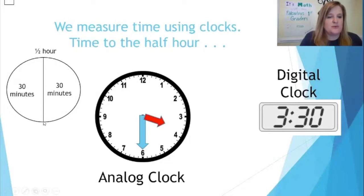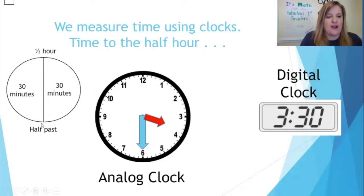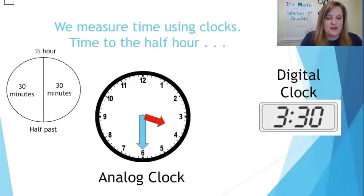It takes 30 minutes for the minute hand to point straight down. We say that it is 'half past' the time because half of our hour has gone by. So whereas when the minute hand pointed straight up we said 'o'clock,' when the minute hand points straight down we say 'half past.'